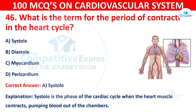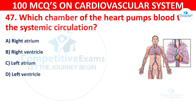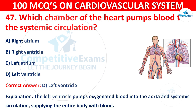Question 47: Which chamber of the heart pumps blood to the systemic circulation? Options are: Right atrium, Right ventricle, Left atrium, or Left ventricle. The correct answer is D, Left ventricle. The left ventricle pumps oxygenated blood into the aorta and systemic circulation, supplying the entire body with blood.